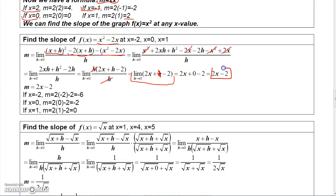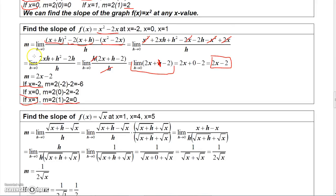So the formula for the slope of that function is 2x minus 2. If I want to find the slope at negative 2, just plug negative 2 in: negative 4 minus 2 is negative 6. If I want to find it at 0, plug 0 in and 2 times 0 minus 2 is negative 2. And if I want the slope at 1, plug 1 in and I get 2 times 1 minus 2, which is 0.